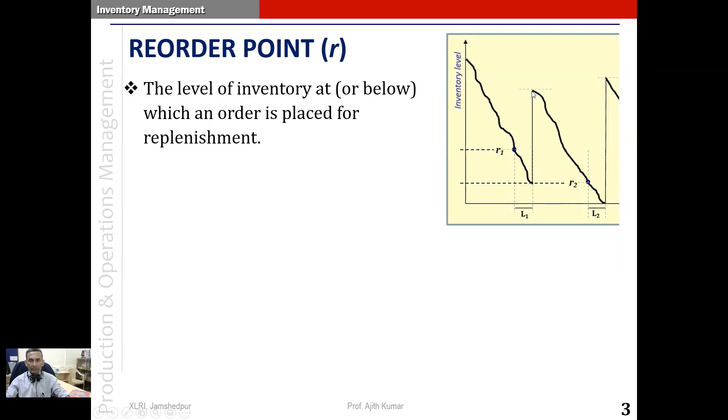The replenishment arrives. And again, it comes down following some arbitrary rate. You see two points here. The first one marked as R1. The second one is R2. These indicate the respective reorder points that were used in these two cycles.